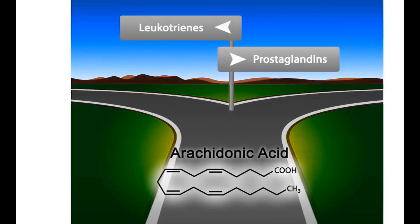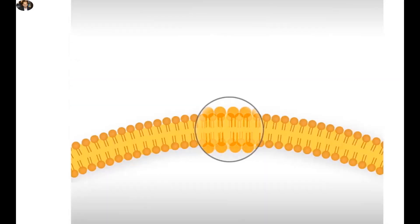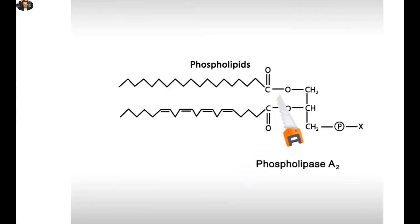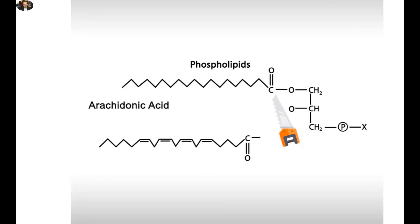We will now go through the other pathway of arachidonic acid metabolism which produces leukotrienes. Eicosanoid production starts from the phospholipid bilayer of the cell membrane, where phospholipase A2 catalyses the release of arachidonic acid from the phospholipid molecules.